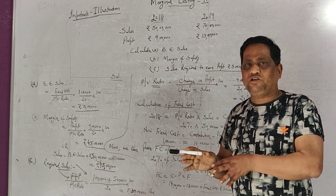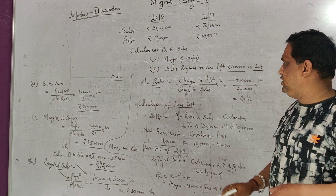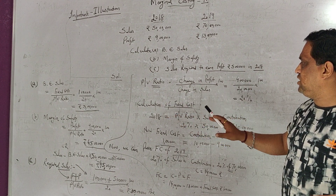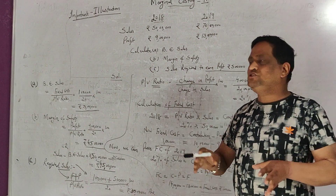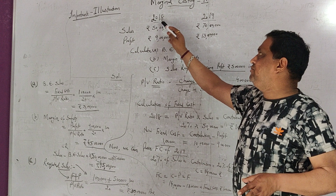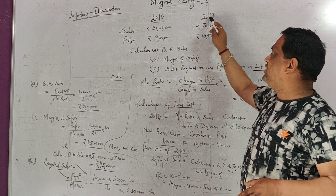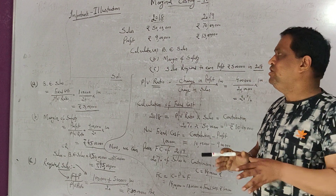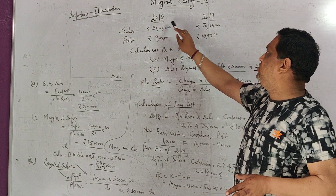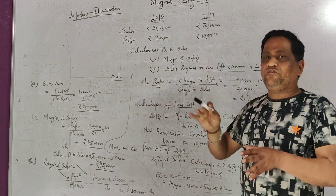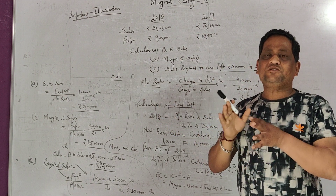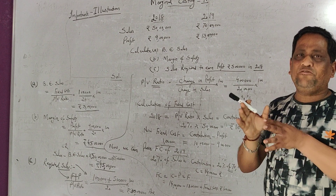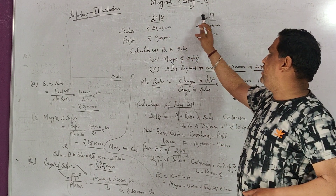So the first step was PV ratio — calculated as 20%. The second topic is calculation of fixed cost. I want to prove that fixed cost in 2018 and 2019 should be the same, because fixed cost remains constant. Whether we check 10 years of data, it will always be the same — that is why it is called fixed cost.